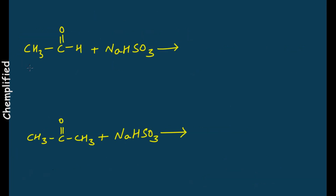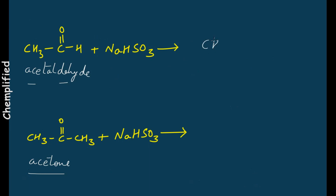Let's take an example of an aldehyde and a ketone. This is your acetaldehyde, which has the carbonyl group — that is C double bond O. When acetaldehyde is treated with sodium bisulfite, you will get the final product, and the name of this compound is acetaldehyde bisulfite.